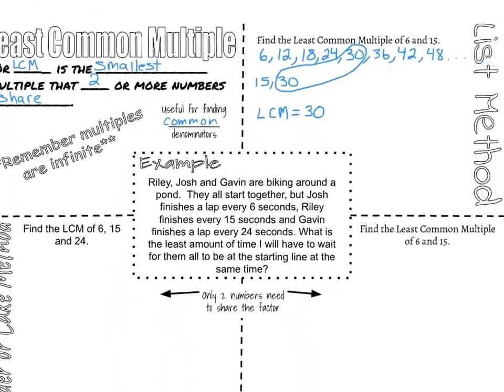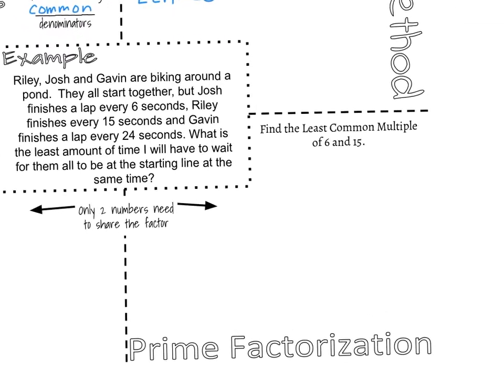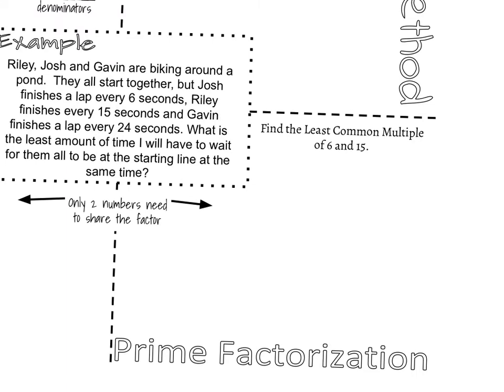Let's look at a second strategy. The list strategy is super common that people will use it. It's nice because it's pretty straightforward. The biggest problem I see is that people miss some of the multiples as they're going. The second strategy we're going to look at is the prime factorization strategy. And we're going to do this for 6 and 15 again. So I'm going to take 6 and do its prime factorization. So 6 breaks into 2 and 3. And I'm actually going to add in the 24 here just to show you what that looks like.